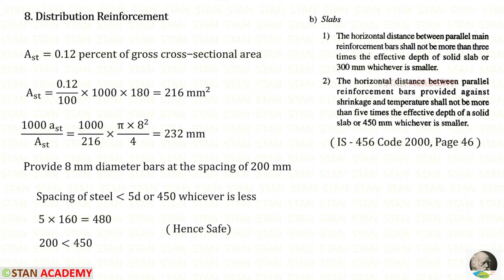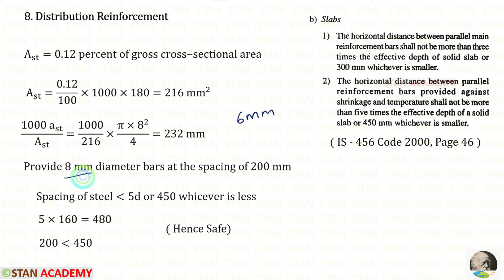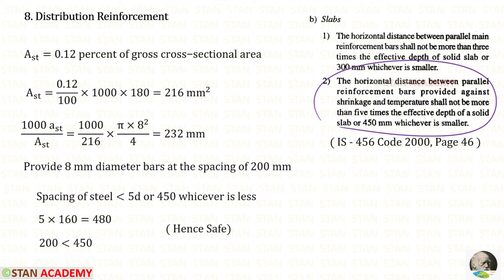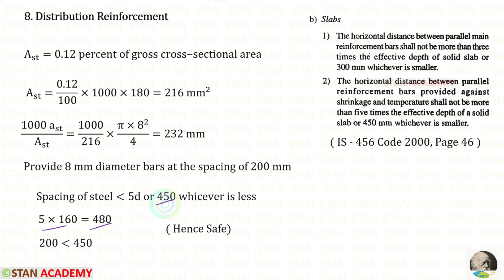Now we are going to design the distribution reinforcement. For distribution reinforcement we provide the minimum area, which is 0.12 percent of the cross sectional area, already calculated as 216 millimeter square. The diameter of distribution bars shall not be less than 6 millimeter, so we keep it as 8 millimeter. Using the spacing formula we get a spacing which we round to 200 millimeter. According to the code, spacing of distribution steel should be less than 5D or 450 millimeter, whichever is less. 5D is 480, so 450 is less, and our spacing of 200 millimeter is less than 450, so it is safe.